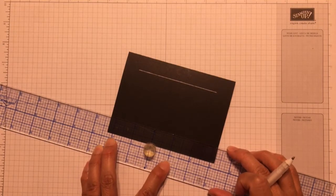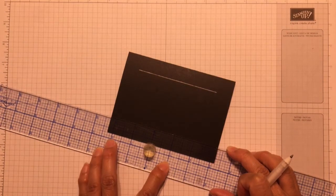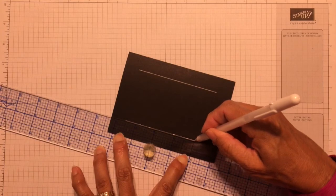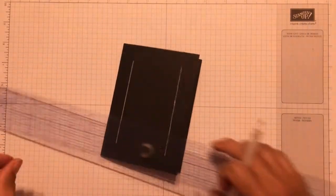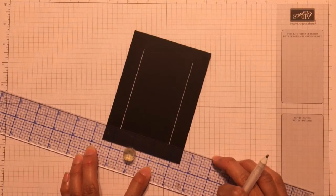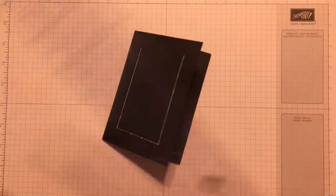When your card base is a lighter color, you really don't need to do this. If you're comfortable with just putting it into your trimmer and lining up to the 3 quarter inch measurement, you can just do it that way.